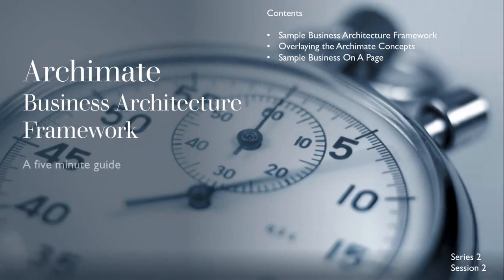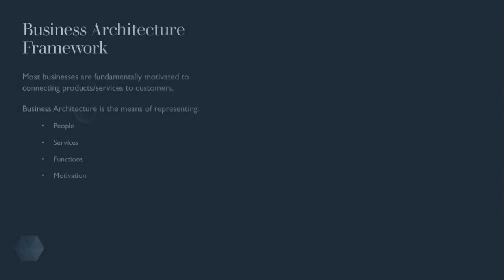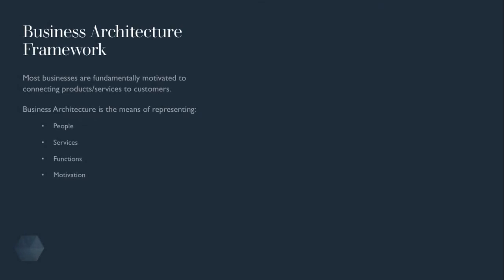Hey, Joe here, and welcome to the second session of Series 2 in the 5-Minute Guides to Archi and the ArchiMate model. This session covers an example of a business architecture framework. A business architecture should aim at representing the people, services, functions, and motivations of a business. The business architecture can then provide a reference point or blueprint to provide context on subsequent application and technology models.